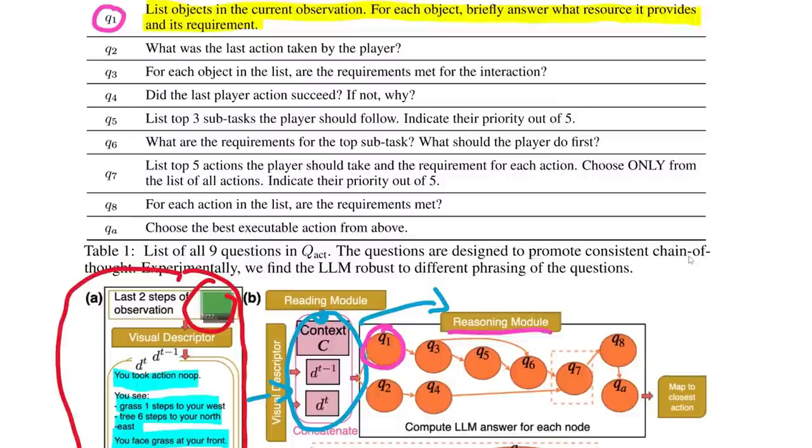The idea is that by using these targeted questions, we can prod the LLM into reasoning about specific pieces of information that might be important, and eventually use logic to narrow that down into an action that the agent can take in the environment. For example, if we follow this upper chain of logic starting with Q1 and ending with Q6, we can see that the first two nodes, Q1 and Q3, prompt the LLM to reason about what interactions are possible based on the current observations.